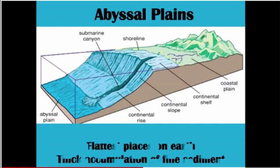The flattest parts of the ocean floor are called the abyssal plains. These are actually some of the flattest land on Earth because so much sediment accumulates here. It settles down to the bottom of the ocean and fills in depressions to make very flat land.